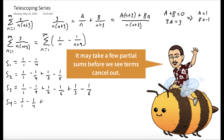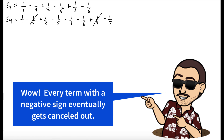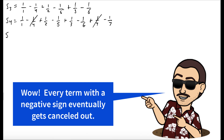Let's use one more partial sum. We have all of the terms from S3, and now the next term is plus 1 fourth minus 1 seventh. Notice that 1 fourth cancels out with the negative 1 fourth from our first partial sum. And we could see if we go to the fifth partial sum, the minus 1 fifth will cancel out. The sixth partial sum, the minus 1 sixth will cancel out, and so forth. Each time we add a term in our series, another one of these negative terms will cancel out.